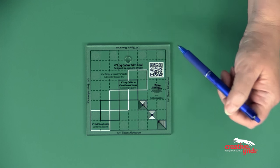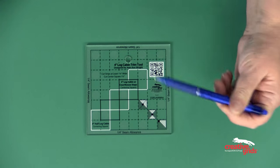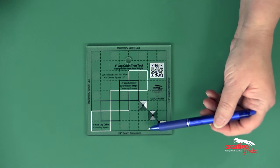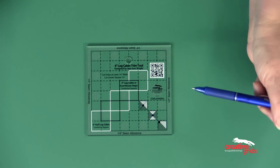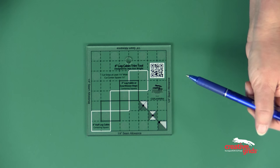The features of this ruler include a quarter-inch grip around the entire outside edge, and there are also gripper dots included on the ruler. This grip holds the fabric in place when you're cutting so it doesn't slip and it ensures accuracy.